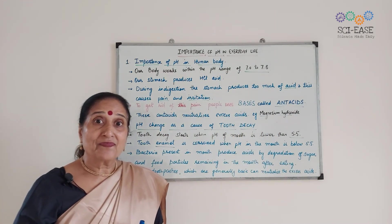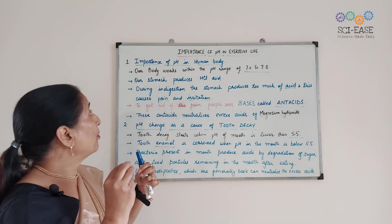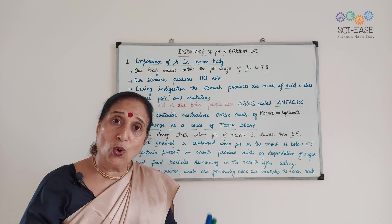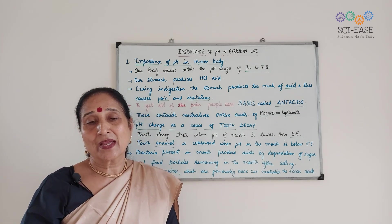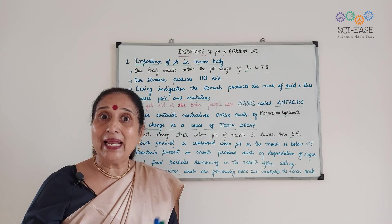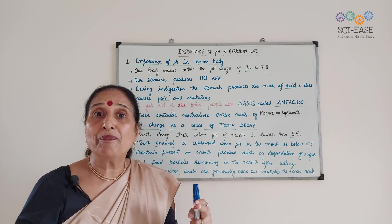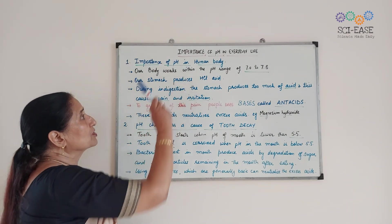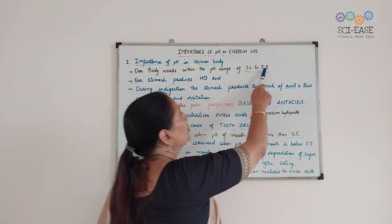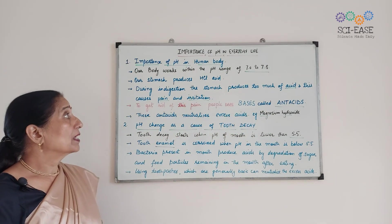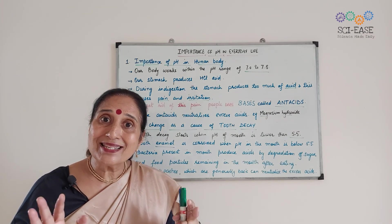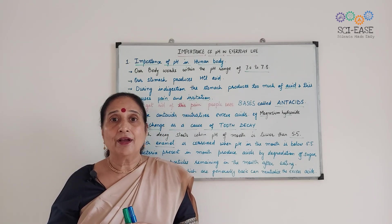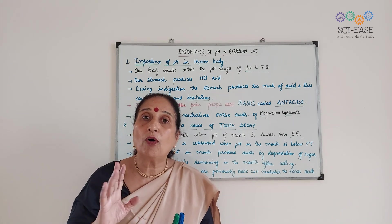First: importance of pH in the human body. What is the role of pH in the human body? Our body works well within the range of pH 7 to 7.8. Our stomach produces HCl — hydrochloric acid — which helps in the digestion of food.